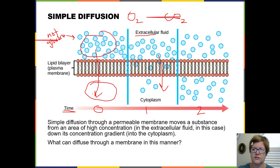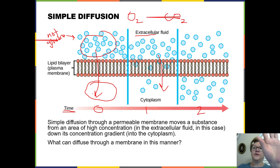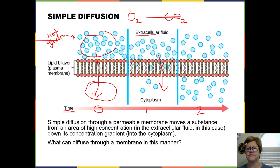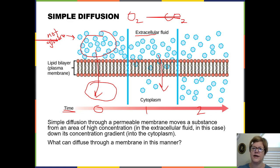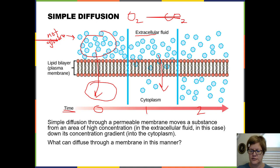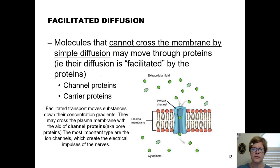Oxygen and carbon dioxide enter and exit your cells this way. If carbon dioxide builds up inside the cell and there's less outside, CO2 moves from inside out — its gradient drives it in that direction. In your body, there's always a gradient moving oxygen into cells and carbon dioxide out, mirroring the process of breathing in oxygen and breathing out CO2.